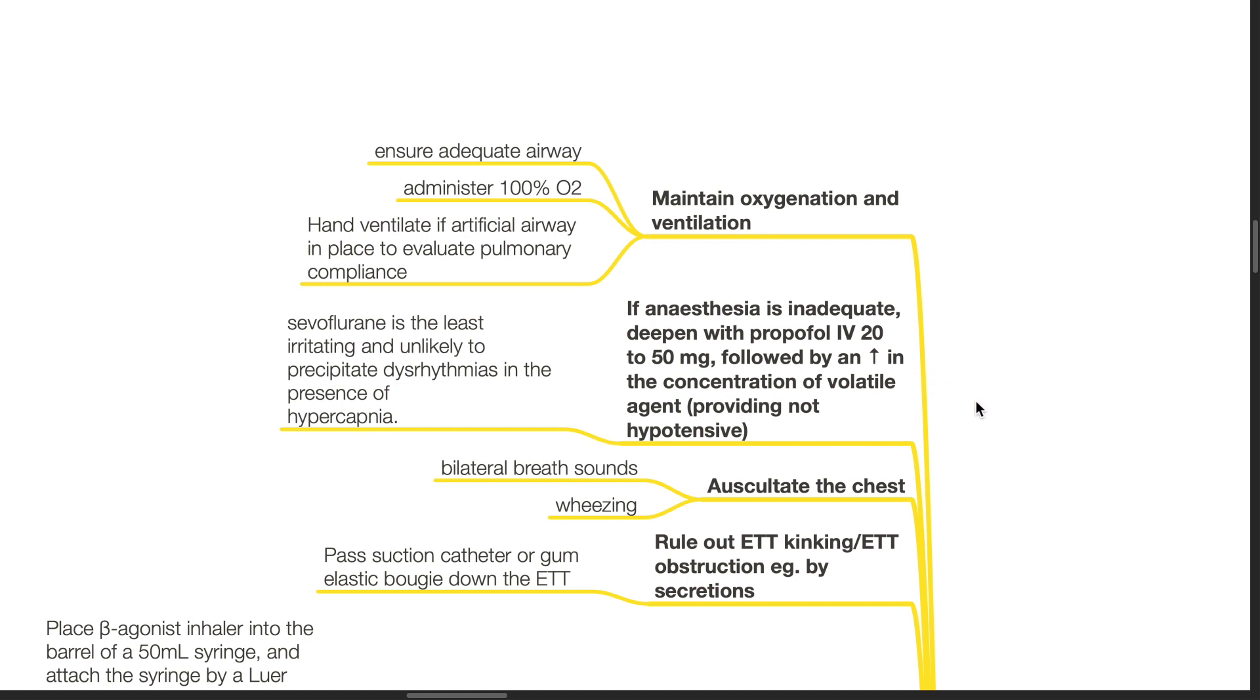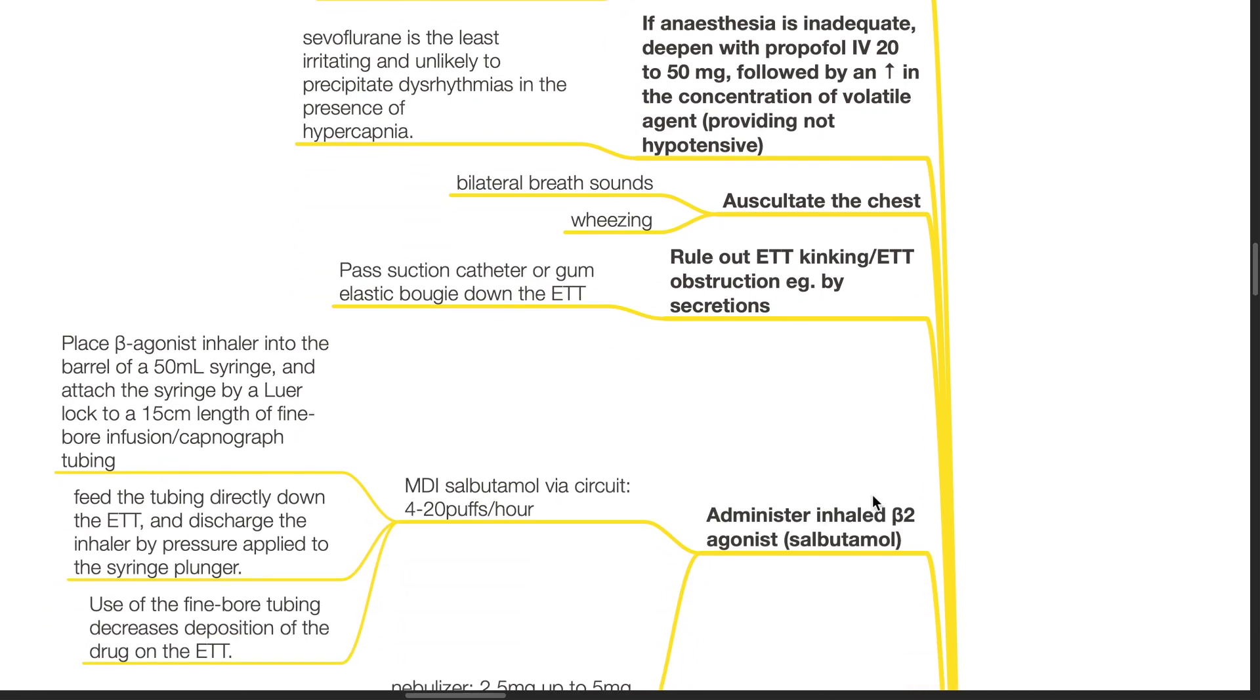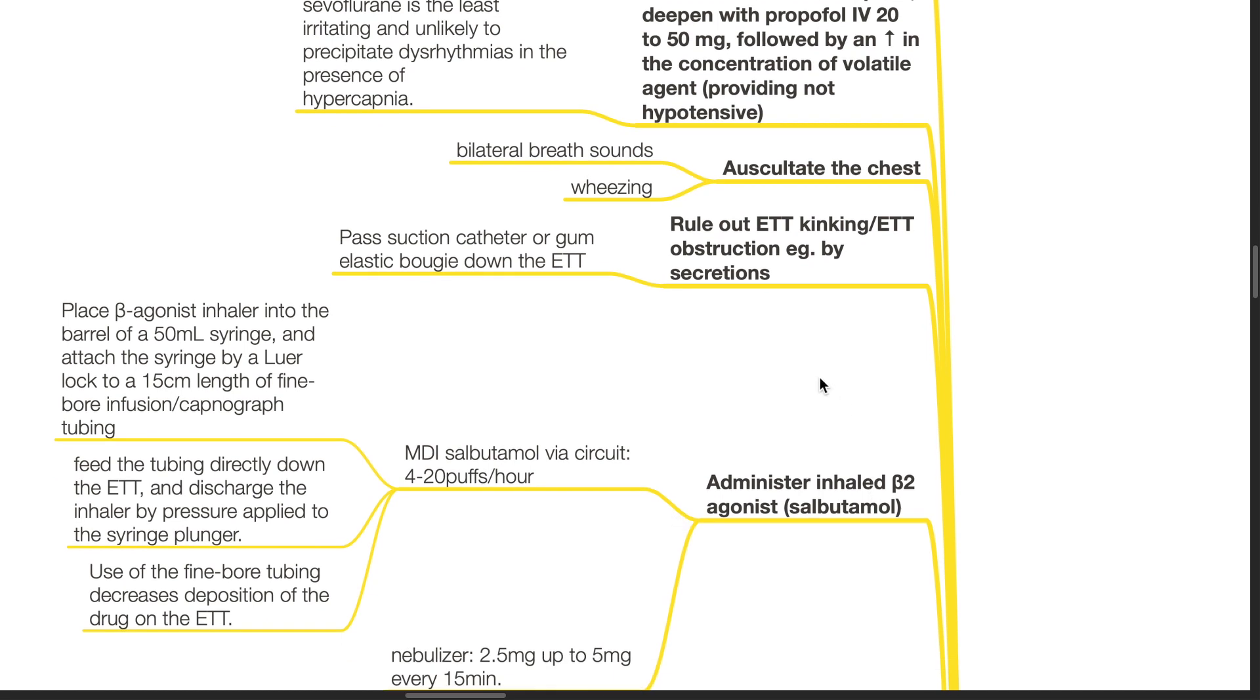Auscultate the chest for bilateral breath sounds. Wheezing may be present. Rule out ETT kinking or obstruction by secretions by passing a suction catheter or GEB down the ETT.